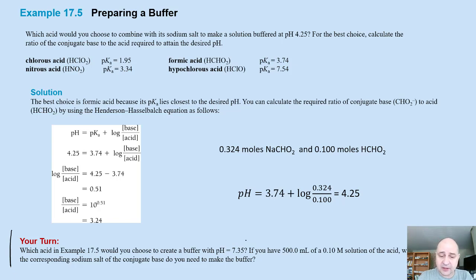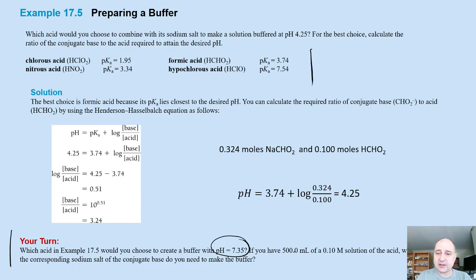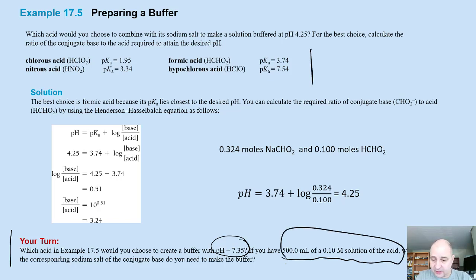It's a little different. It also has you prepare a buffer, and you will have to choose an acid from a list. What makes it more complicated is you are told you have to use a 500 mL solution of an acid at a given molarity, and it asks what mass of the corresponding sodium salt of the conjugate base you need to make the buffer.